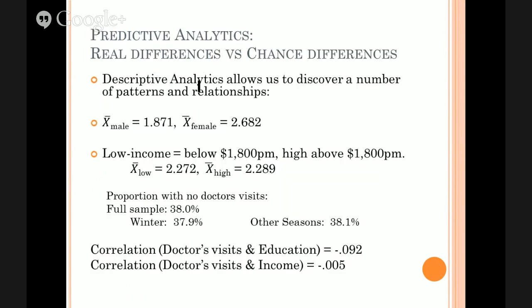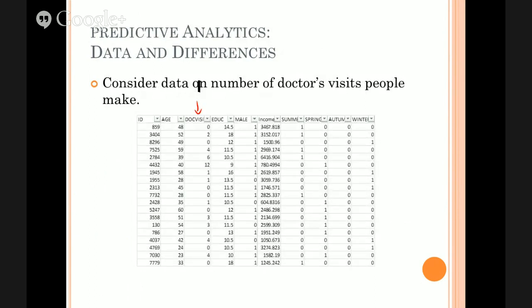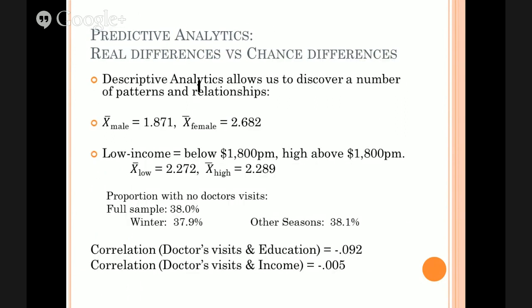We can take this set of data — it's a set of data on just over a thousand individuals that's been collected. Clearly, a thousand people doesn't mean we're talking about every single person in the population. The population of adults in Australia is over 10 million, so we've only got a thousand. But based on that thousand, we learn some things. In the tools around descriptive analytics, the word 'descriptive' is all about describing what's actually going on with this particular set of data.